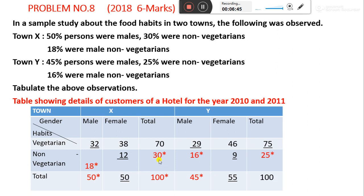For Town X: 18% male non-vegetarian is given. So female non-vegetarian equals total non-vegetarian minus male non-vegetarian, that is 30 minus 18 equals 12% female non-vegetarian. 70% total vegetarian is calculated. This is how we calculate Town X.